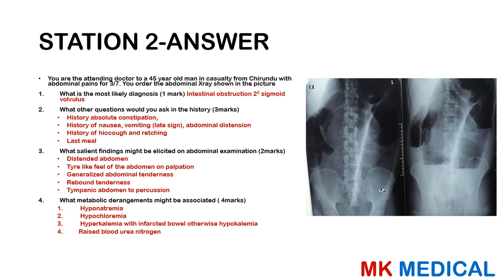History of hiccup or retching, as well as their last meal. Salient features on examination include a distended abdomen with a tyre-like feel on palpation, generalized tenderness, possible rebound tenderness, and tympanic percussion. The metabolic derangements include hyponatraemia from vomiting and loss of electrolytes, hypokalaemia, but also potential hyperkalaemia when the bowel becomes infected and cells die releasing potassium. There will also be a raised blood urea nitrogen.